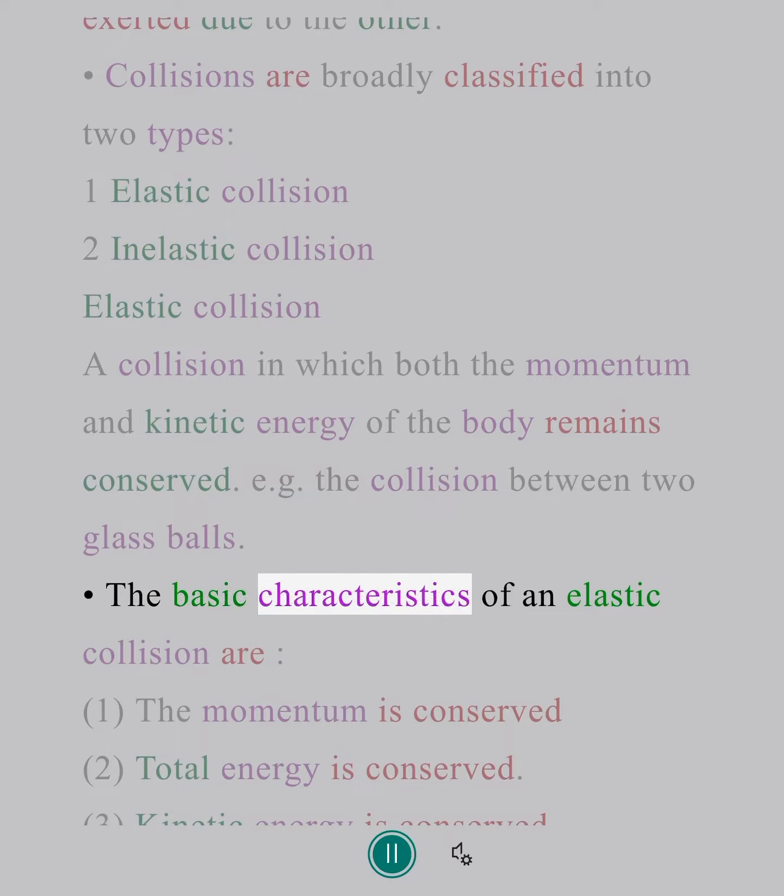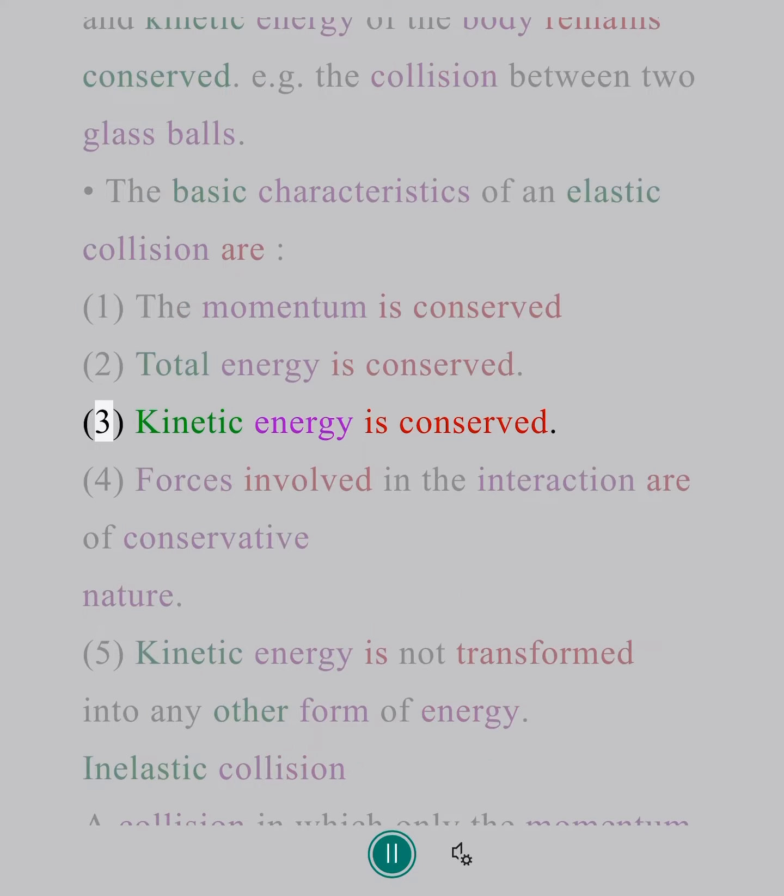The basic characteristics of an elastic collision are: 1. The momentum is conserved. 2. Total energy is conserved. 3. Kinetic energy is conserved.